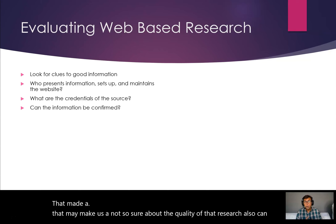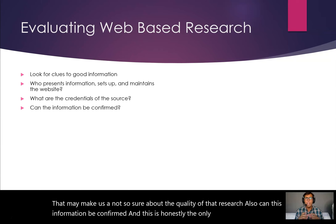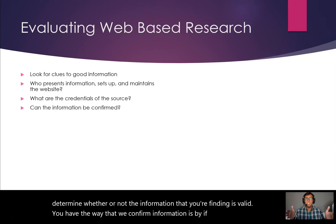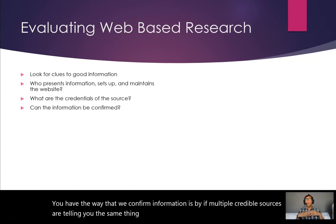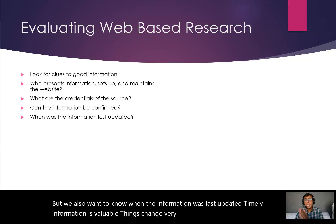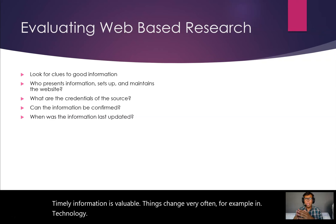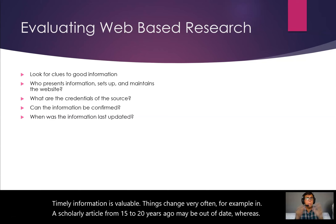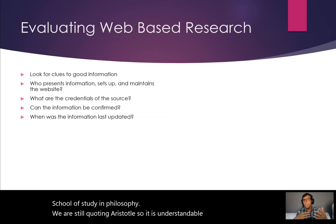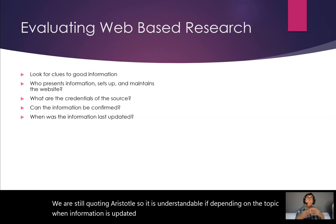Can this information be confirmed? This is honestly the only way to truly determine whether the information you're finding is valid. If multiple credible sources are telling you the same thing, then you can confirm it is indeed credible. We also want to know when the information was last updated — timely information is valuable. In technology, a scholarly article from 15 to 20 years ago may be out of date, whereas in philosophy we're still quoting Aristotle. We want to be sure we're getting the most up-to-date information.